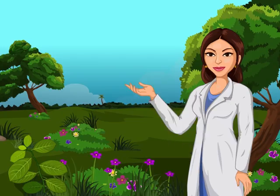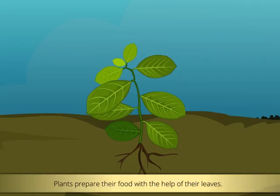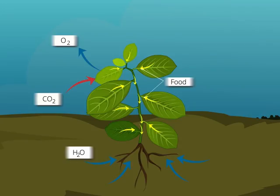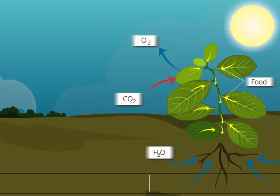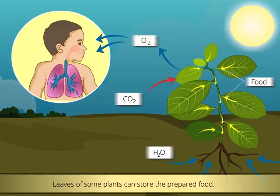Now let us understand the functions of leaves. Plants prepare their food with the help of their leaves. Through the stomata of their leaves, plants give oxygen and take carbon dioxide from the atmosphere. The carbon dioxide is used to make food in the presence of sunlight. The oxygen released by plants is used by human beings and animals for breathing.